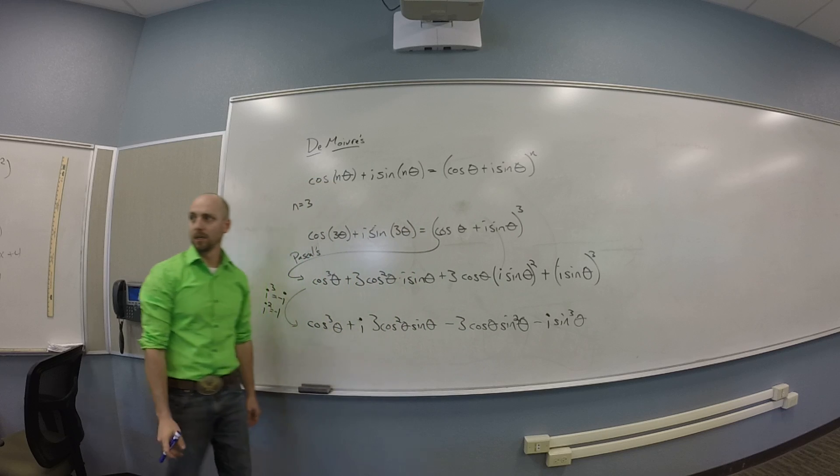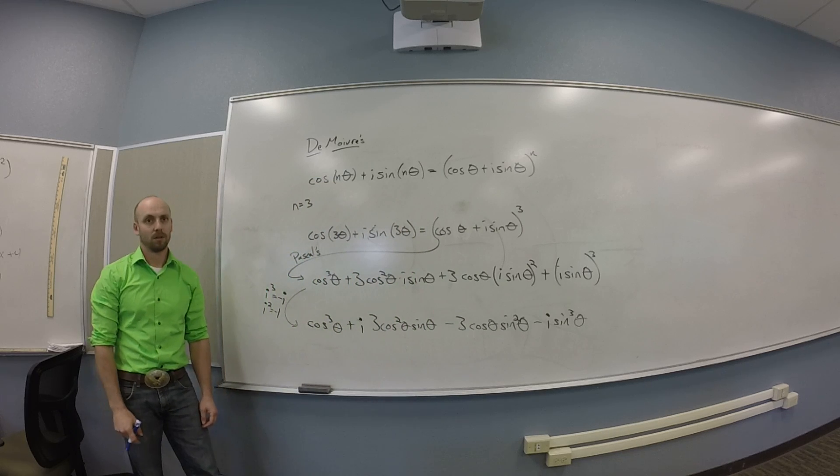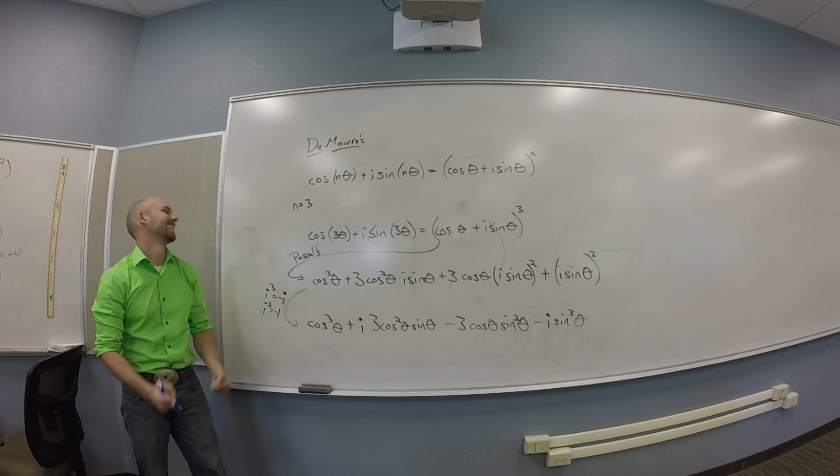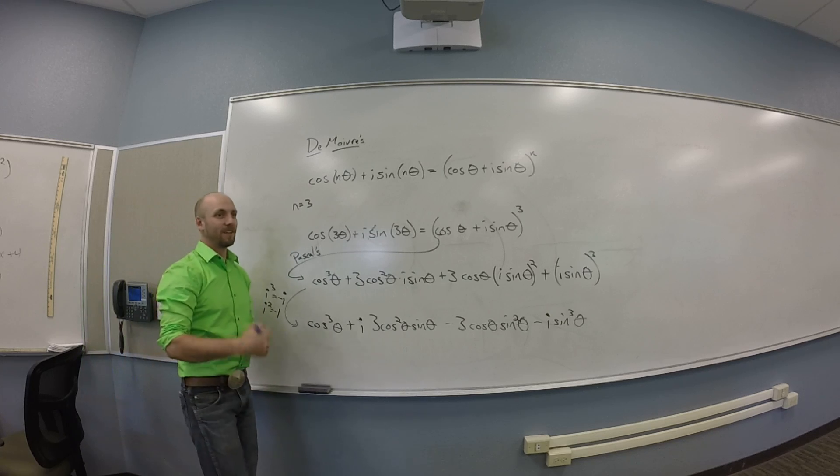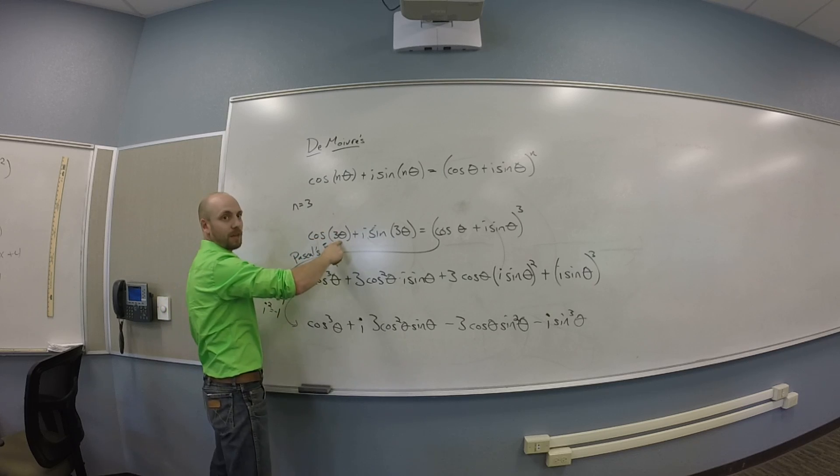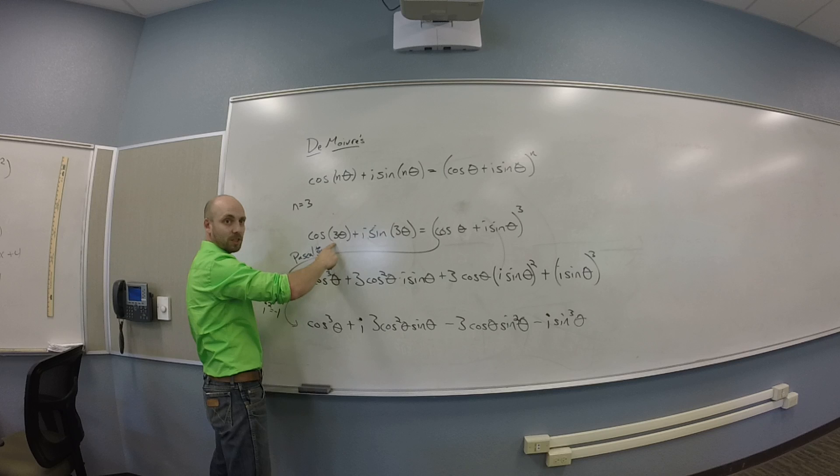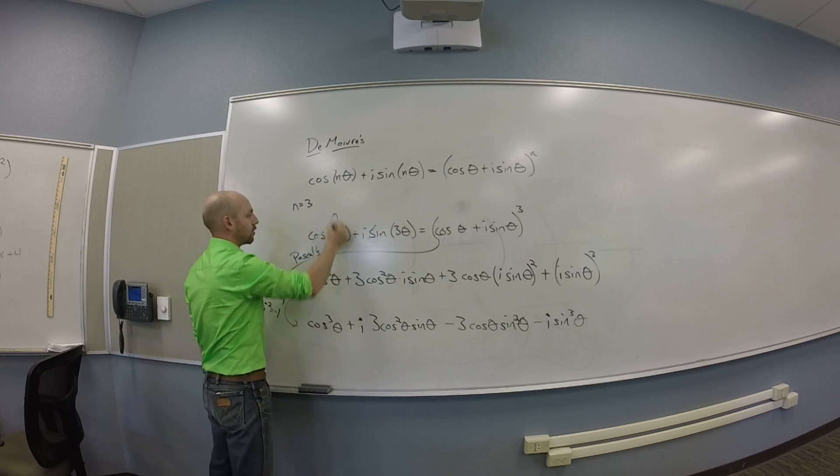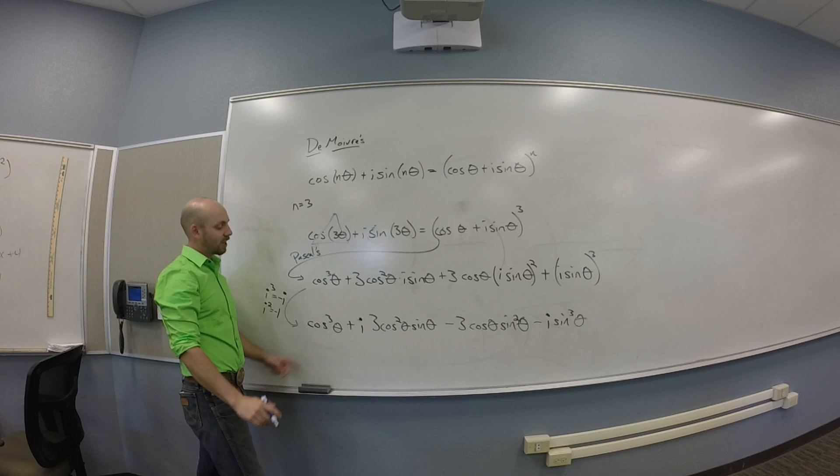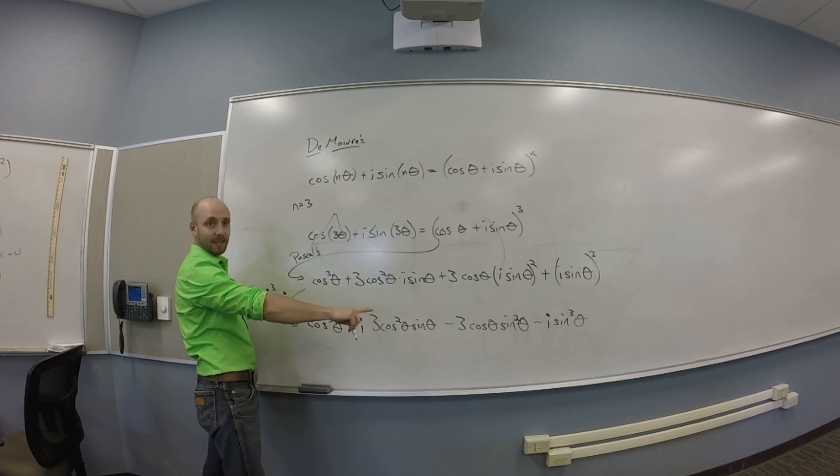And then what? So you can take the cosine. Up here I have cosine of 3 theta, which doesn't have any i's on it. So that's the real part. I'm going to put a triangle on that bit. That's going to go with the real parts down here.